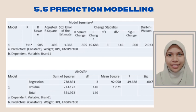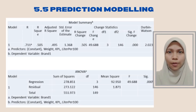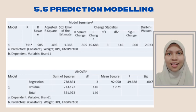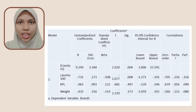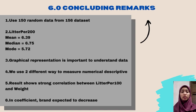Next for the prediction modeling. Finally, the R-square value is 0.505, which is 50.5% of the variation in brand 1 can be explained by liter per 100, KPL and weight. The adjusted R-square value is 49.5% and the Durbin Watson is 2.023. The P-value from the ANOVA table is less than 0.001, which means that at least one of the three variables - liter per 100, KPL and weight - can be used to model brand. Lastly, for the coefficient table, the P-value between liter per 100 and KPL are significant predictors of the brand. That's all from me for prediction modeling.